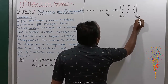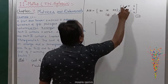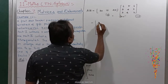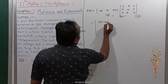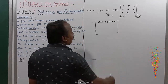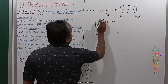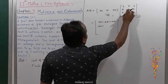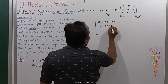AB equals: first row, first column: 30 into 6 = 180, plus 15 into 3 = 45, plus 45 into 3 = 135. First row completed. Next, first row second column: 30 into 5 = 150, plus 15 into 4 = 60, plus 45 into 4 = 180.